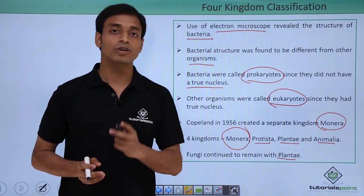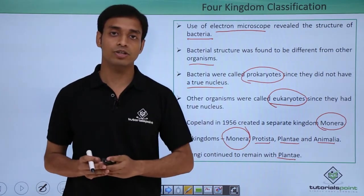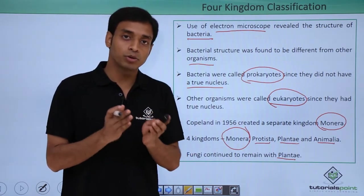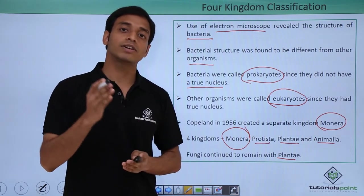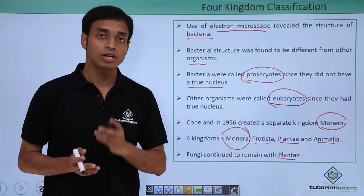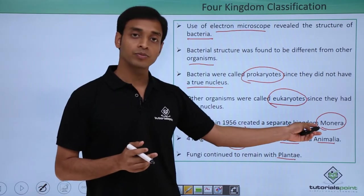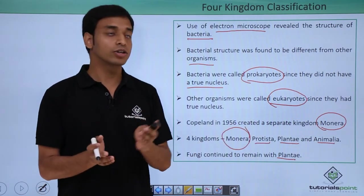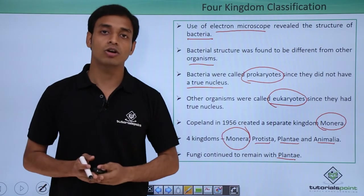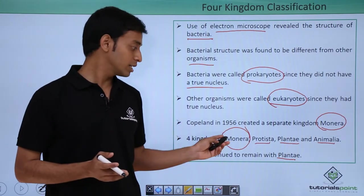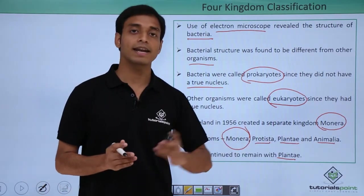In this video we have talked about the four kingdom classification, which was put forward to overcome the disadvantages of three kingdom classification. We have seen the introduction of a new group, Monera, and we discussed the discovery of the electron microscope, because of which cell structures got revealed. We now have four kingdoms: Kingdom Monera, Protista, Plantae, and Animalia.